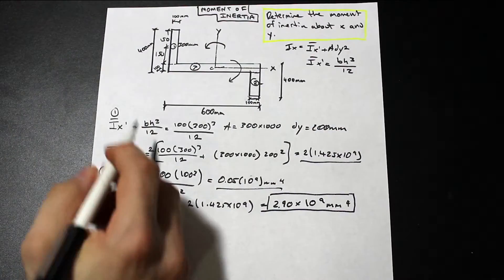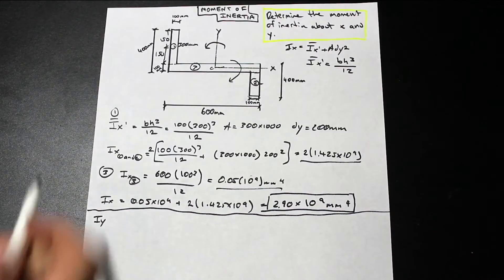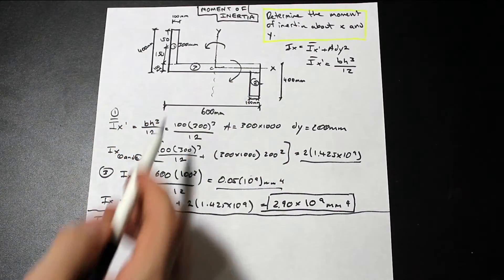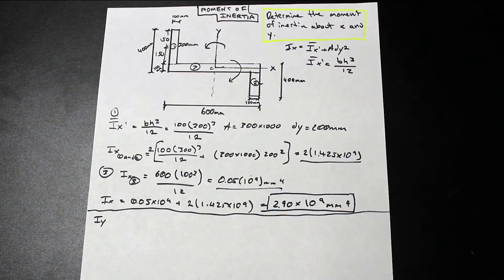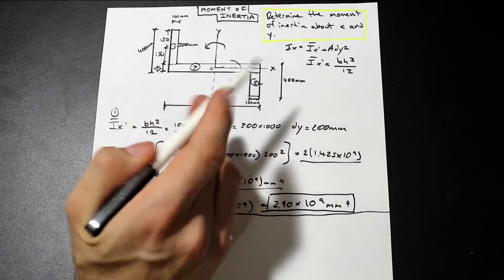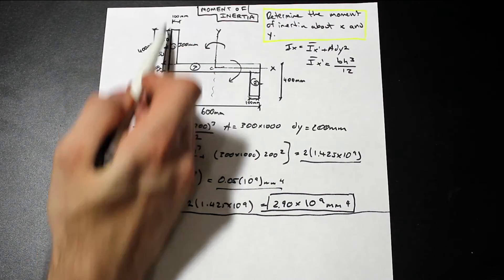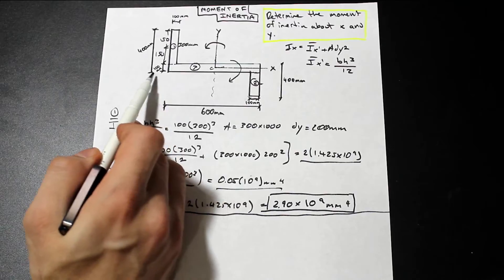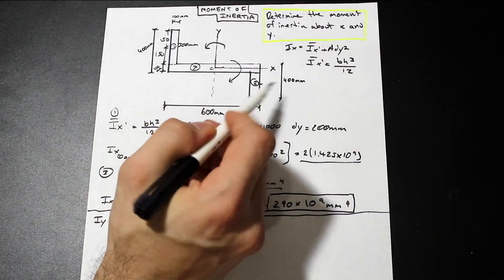Now let's find Iy. This one is a little bit different. We're working on our y-axis now — bending is about y. So now this is our height and this is our base. Along the axis is the base, and perpendicular to the axis of bending is our height. Let's start with shapes one and two again.